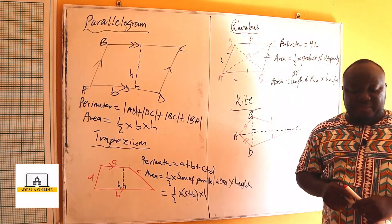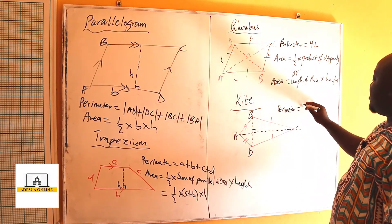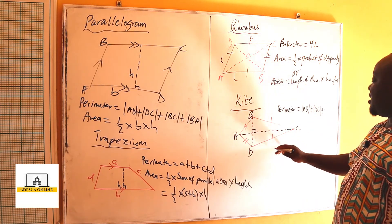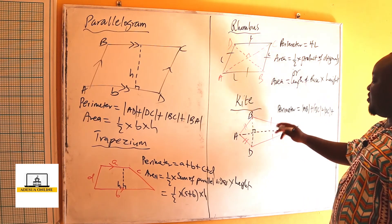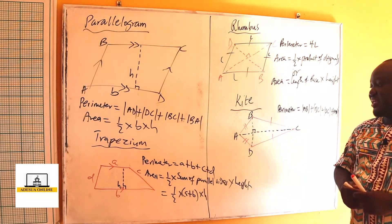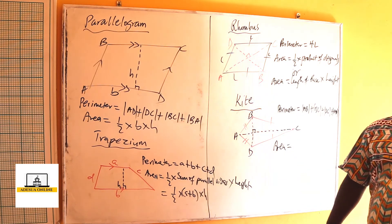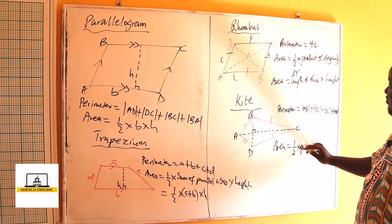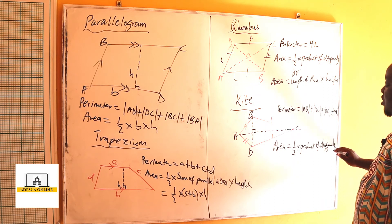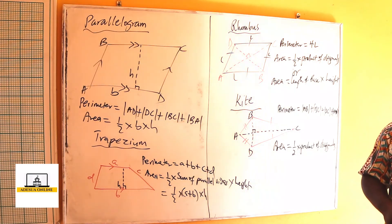The perimeter of a kite is equal to the length of AB plus the length of BC plus the length of DC plus the length of DA. So this is how we find the perimeter, the length around a kite. Its area is given by half times the product of the diagonals.